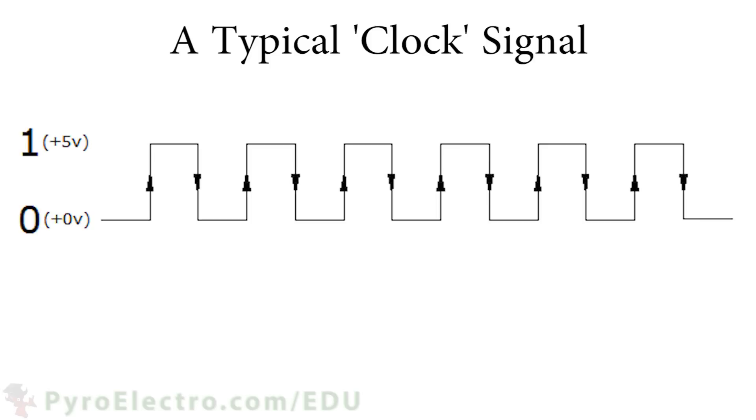Let's take a look at the anatomy of a clock signal to see what it is and what attributes it has. The clock signals we'll be using will change between 0 volts, which is logic 0, and 5 volts, which is logic 1, like the signal you see on your screen now.